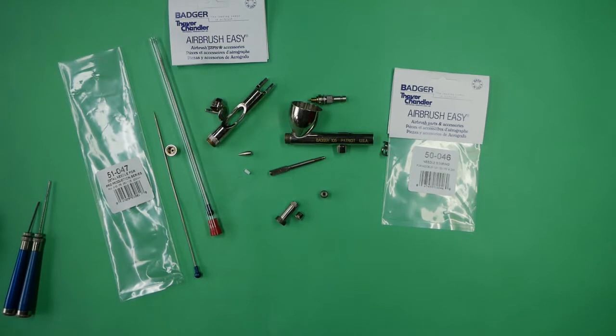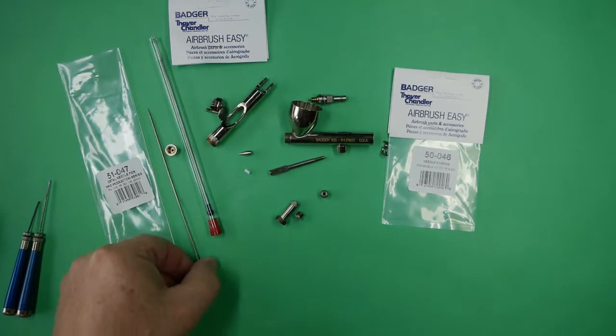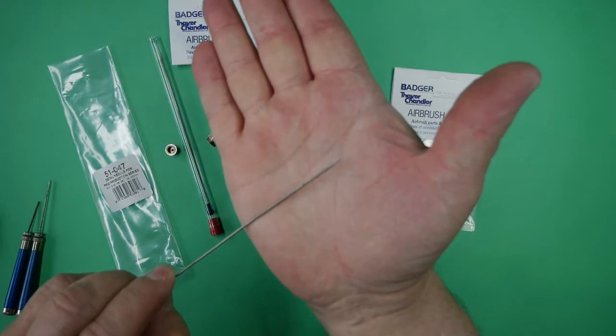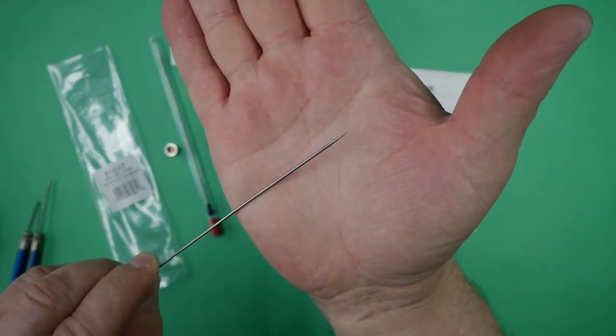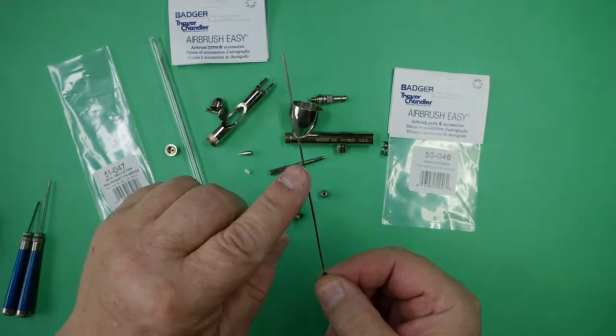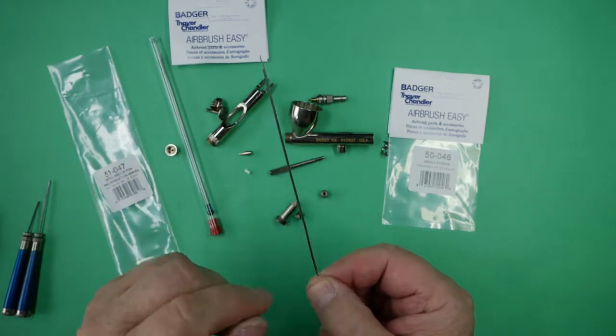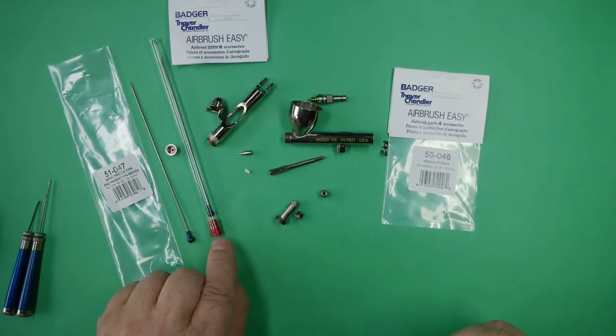We've now cleaned all the airbrush up and it's time to get it reassembled. We did discover as the customer pointed out that the needle is definitely bent, and also looking at the needle it does have a kink in it down here, so we will be replacing the needle with a new one.